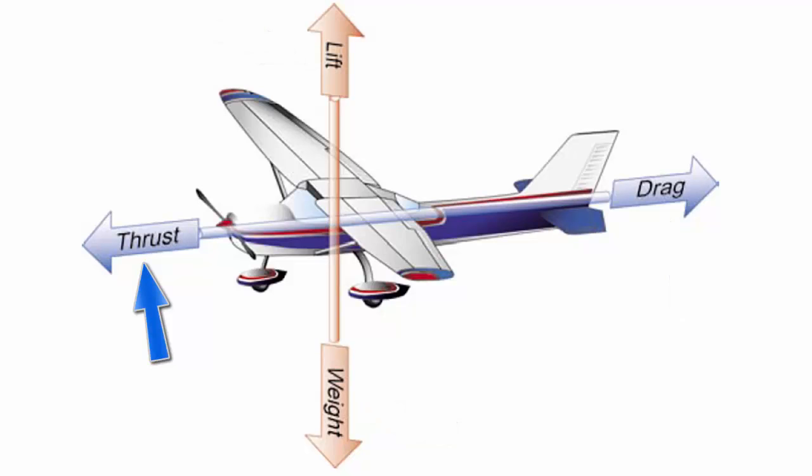Thrust is the forward force produced by the engines and the propeller. It acts opposite to the force of drag. As a general rule, it is said to act parallel to the longitudinal axis of the aircraft.